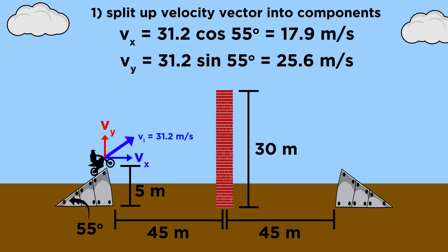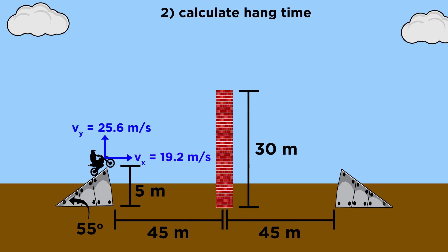The y component will be thirty-one point two sine fifty-five, which is twenty-five point six meters per second. Now, the easiest thing to do with this will be to find out how long Max is in the air. From there, we can figure out lots of other things.